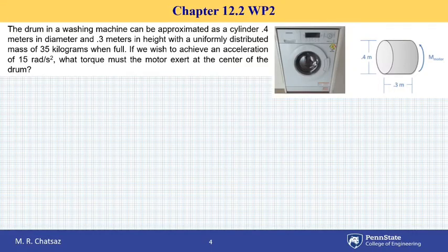Here we have the drum of a washing machine that can be approximated as a cylinder with a diameter of 0.4 meters as shown and uniformly distributed mass of 35 kilograms when full. If we wish to achieve an acceleration of 15 radians per second squared, what torque must the motor exert to the drum?